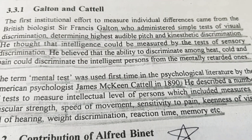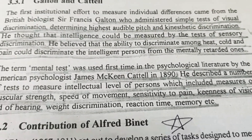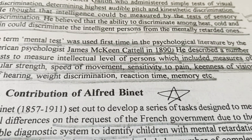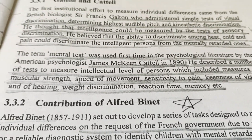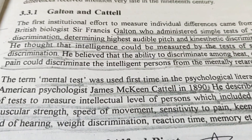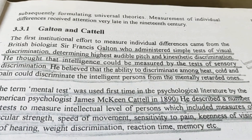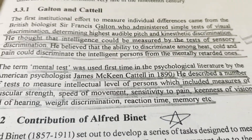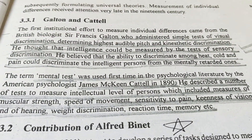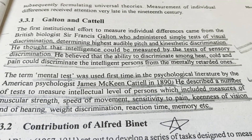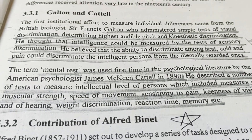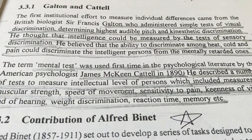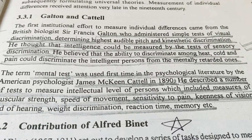The intelligence test was used to compare a mentally retarded person and a normal person. The next important term is 'mental test,' which was used for the first time by Cattell — James McKean Cattell — in 1890. He described different tests measured at the intellectual level, including muscular strength, speed of movement, sensitivity to pain, keenness of vision and hearing, weight discrimination, reaction time, and memory.